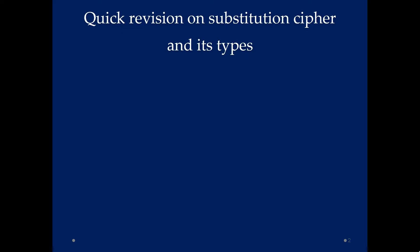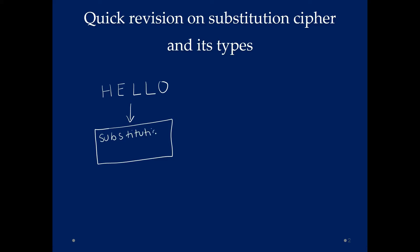A substitution cipher basically takes the letters of the plain text. For example, let me say I want to send a secret message called 'hello' to another receiver. We use a substitution cipher and it replaces each letter of the plain text with another letter. For example, H may be replaced with X, E will be replaced with D, L will be replaced with C, and O may be replaced by M. So we are substituting each letter of the plain text with another letter — this is known as substitution cipher.